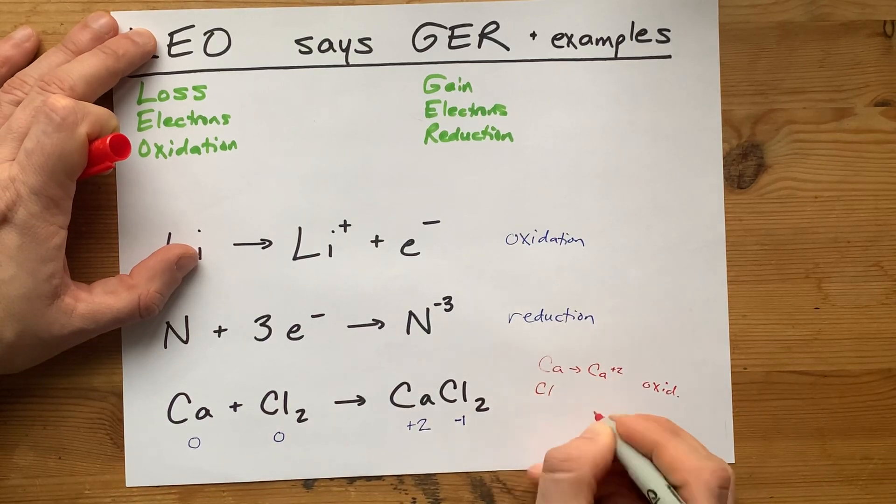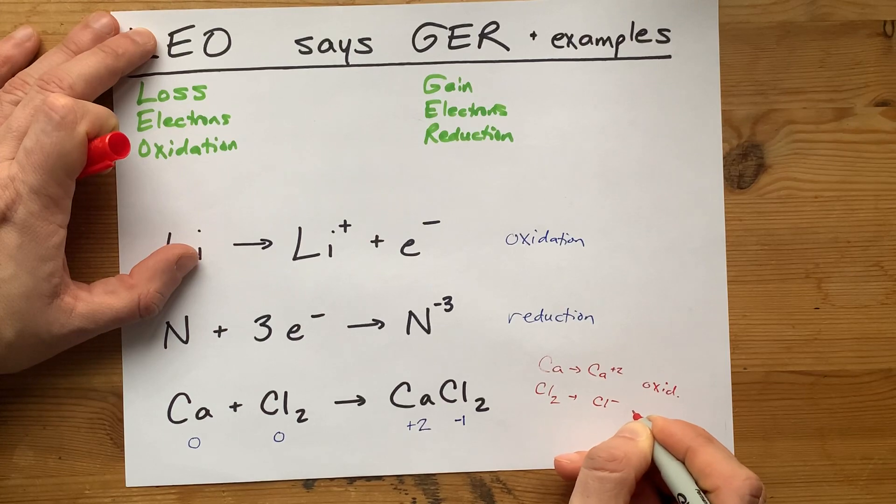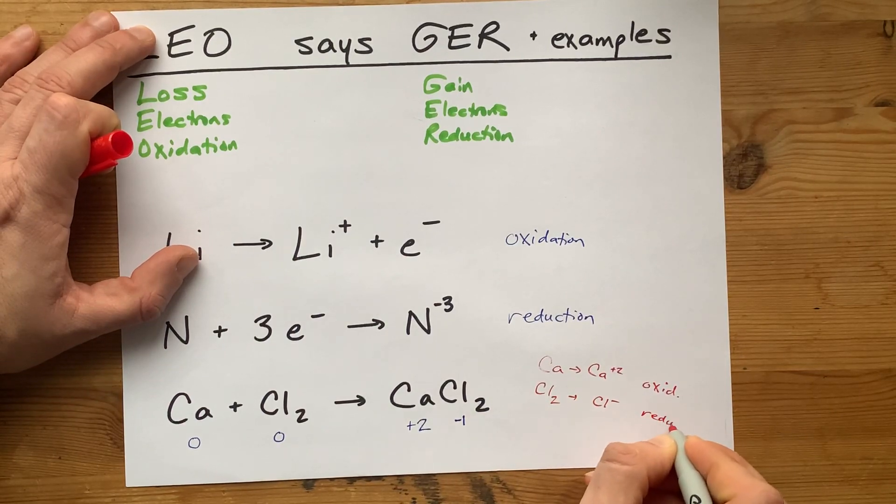Similarly, chlorine, each of the chlorines is becoming Cl minus. Each of those is gaining electrons. The charge is getting more negative, and that is called a reduction.